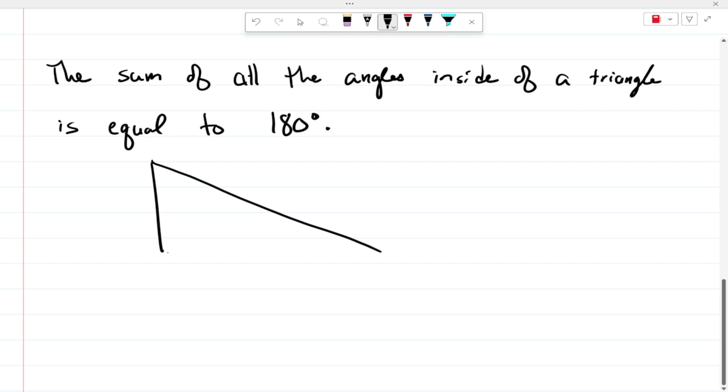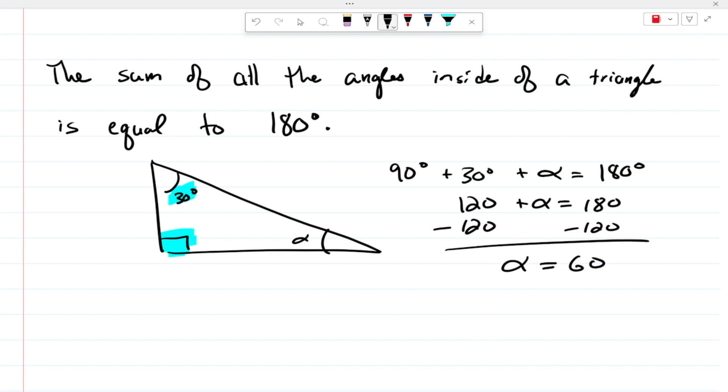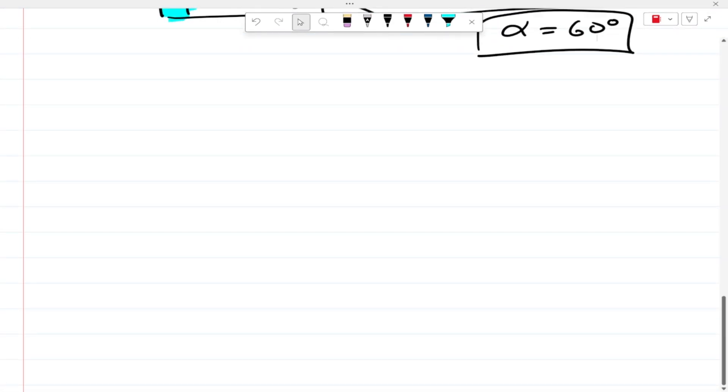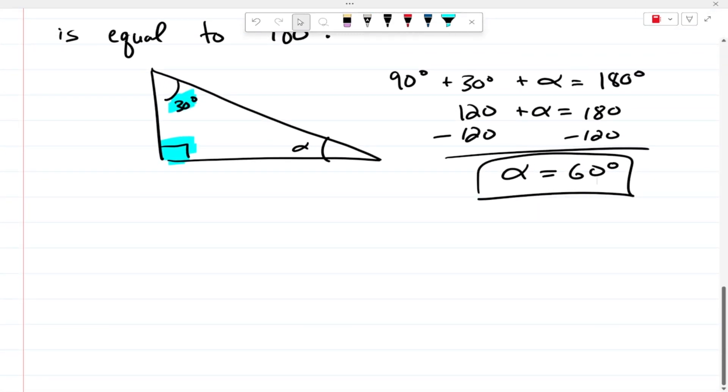For example, if we have a right triangle and I asked you to find alpha, well we know that the sum of the angles—so we have a 90 degree angle right here plus 30 degrees that's right here plus alpha—has to equal 180. Therefore, just some basic math, we would say 90 plus 30 is 120, and then subtract 120 from both sides, alpha would equal 60 degrees.